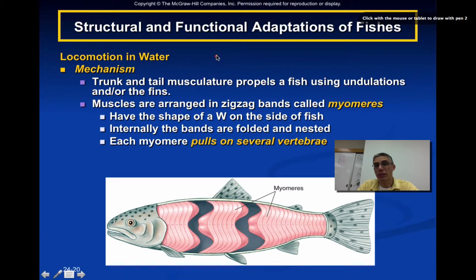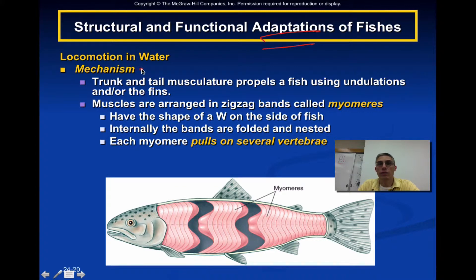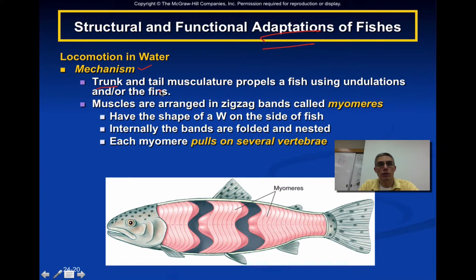Because we're talking about animals in a completely different environment, there are very special structural and functional adaptations. When it comes to locomotion, moving through water is definitely different from moving through air or on land. Fish have developed a very efficient mechanism to move from place to place, using two parts of their body: the trunk, made up of lots of muscles located from right behind the head to almost where the tail fin starts, and of course the fins themselves. Many fish perform undulations — a movement that looks like an S — essentially moving back and forth and pushing against the water.